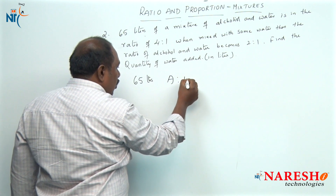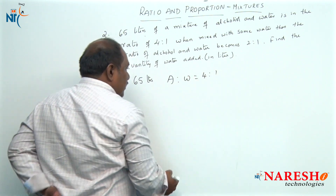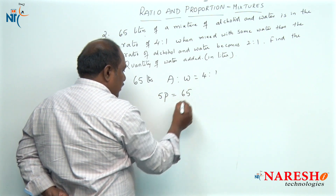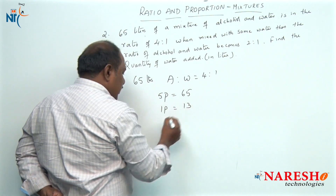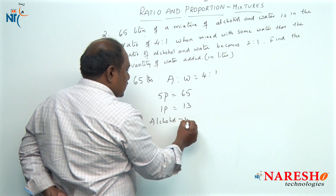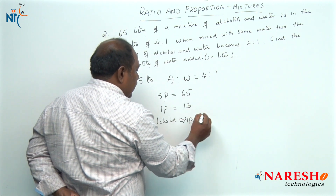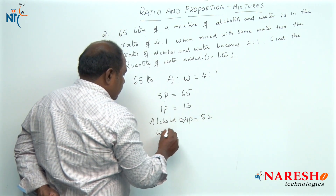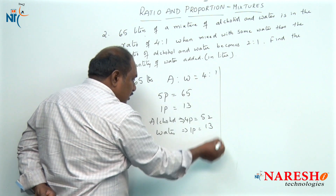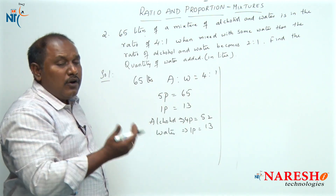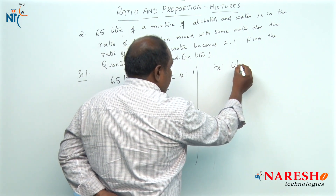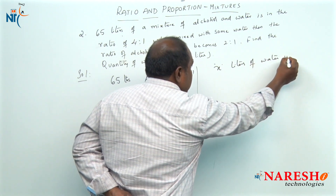Alcohol is to water is in the ratio of 4 is to 1, that is totally 5 parts. So 5 parts should be equal to 65, and 1 part will be equal to 13. Alcohol, which is 4 parts, should be equal to 4 into 13, that is 52, and water which is 1 part is 13. To this mixture we are adding some water; we do not know how many liters. So let us assume x liters of water is added.